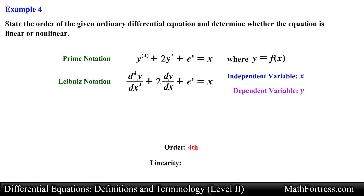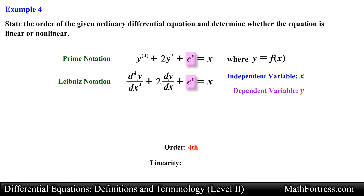Next let's check if this ODE is linear. First, the dependent variable y and its derivatives are all linear in form. Second, the products of y and its derivatives are solely in terms of the independent variable x. The final step is to check transcendental functions. This ODE contains e raised to the power of y — the argument is the dependent variable y, which makes the ODE nonlinear. If it were e to the x instead, we would have a linear ODE. We classify this as a fourth order nonlinear ODE — it is nonlinear because of the e to the y term.